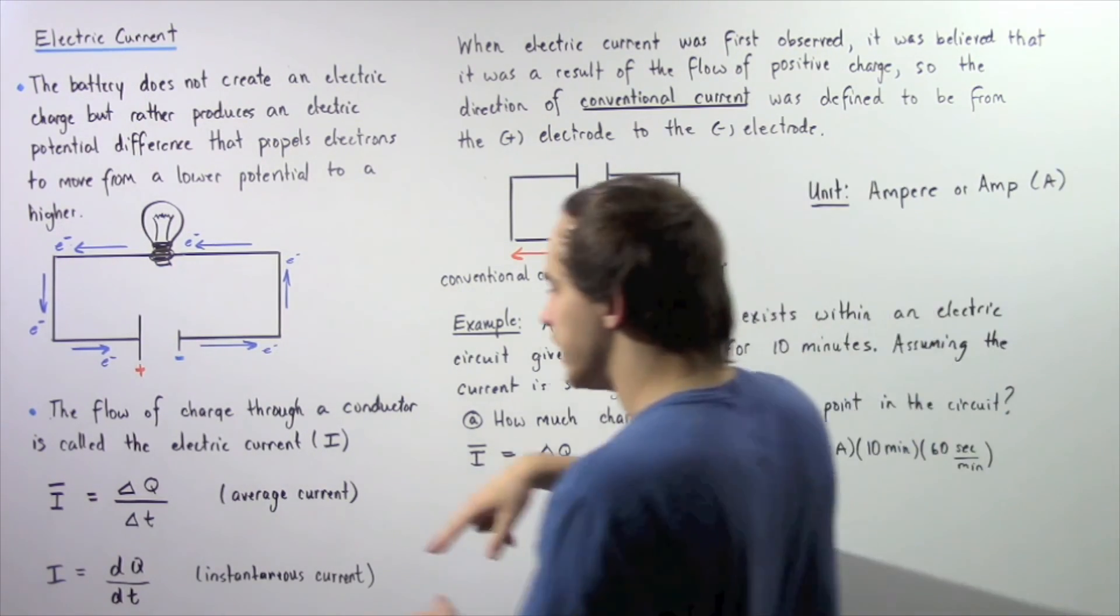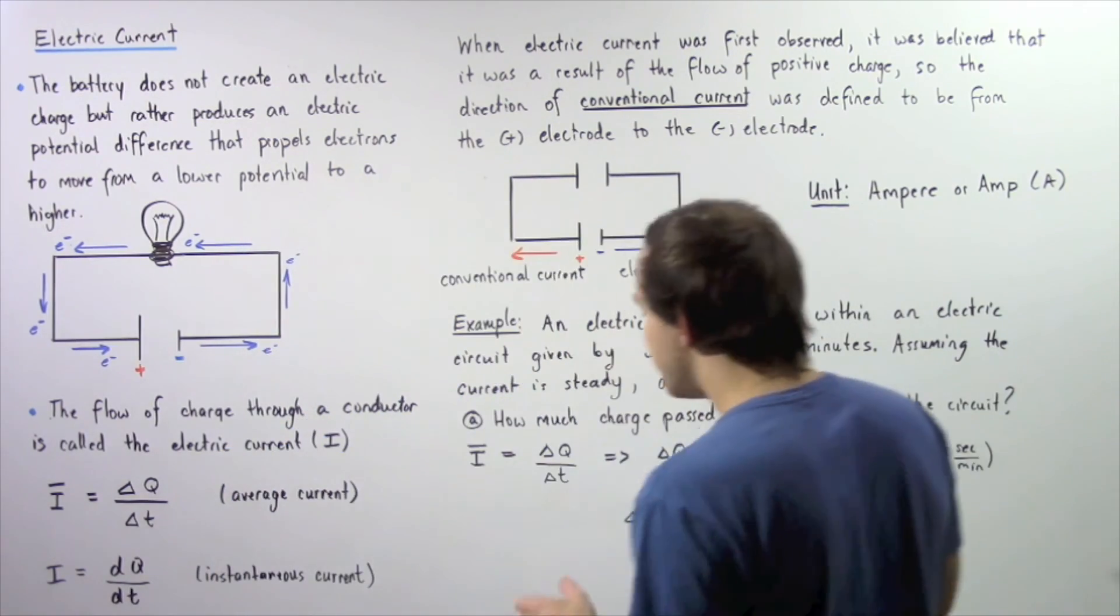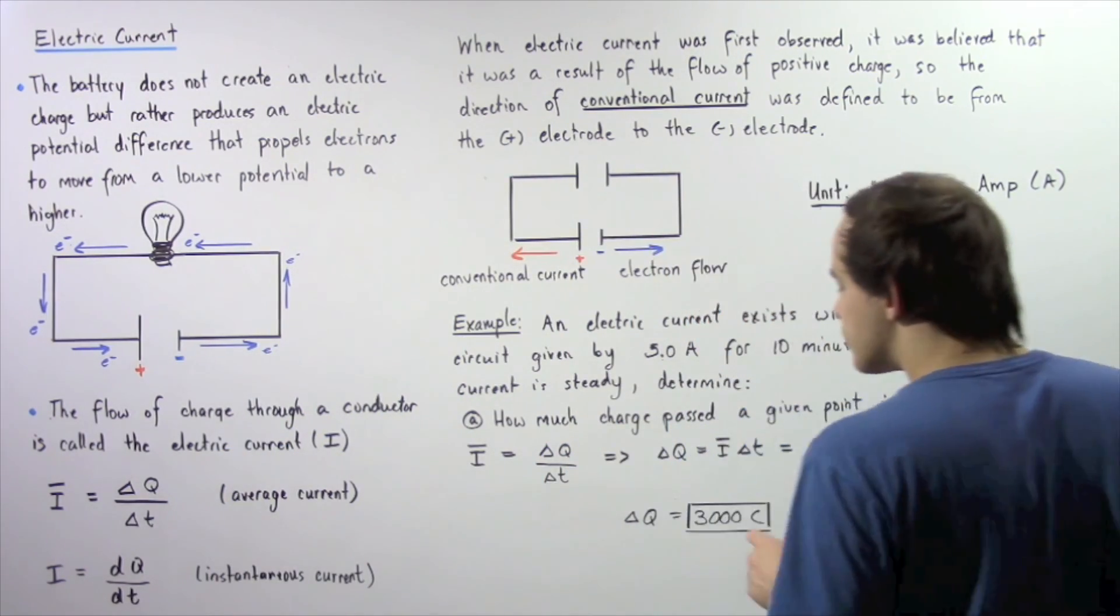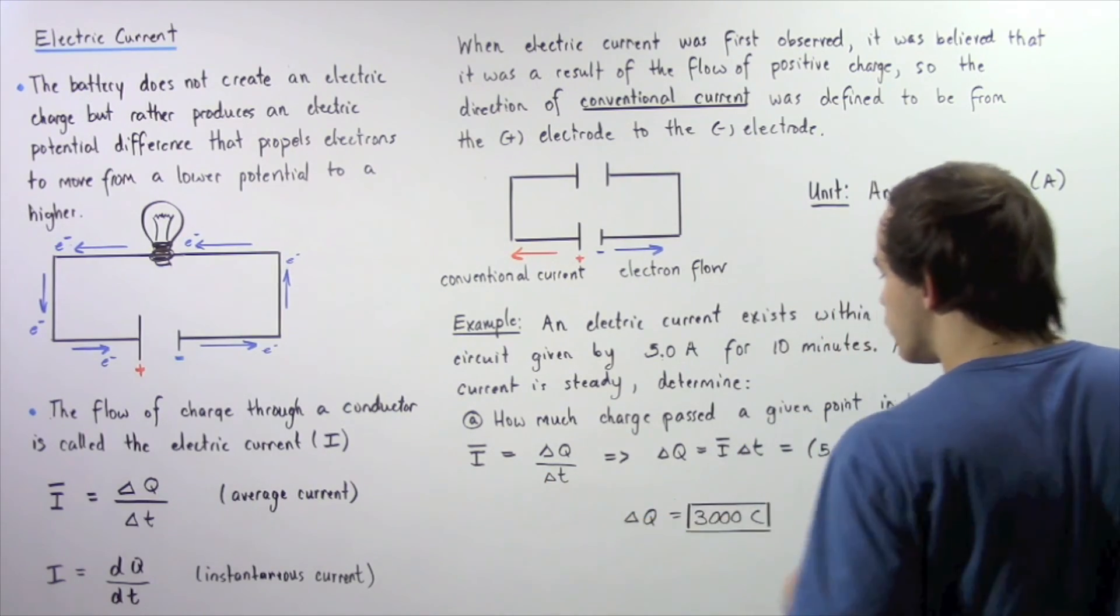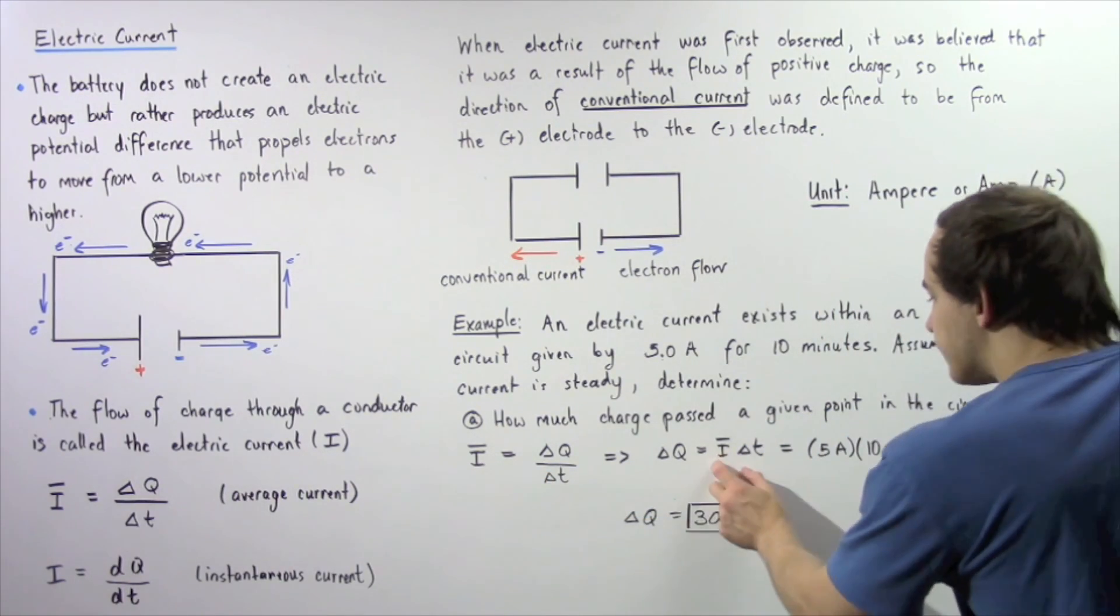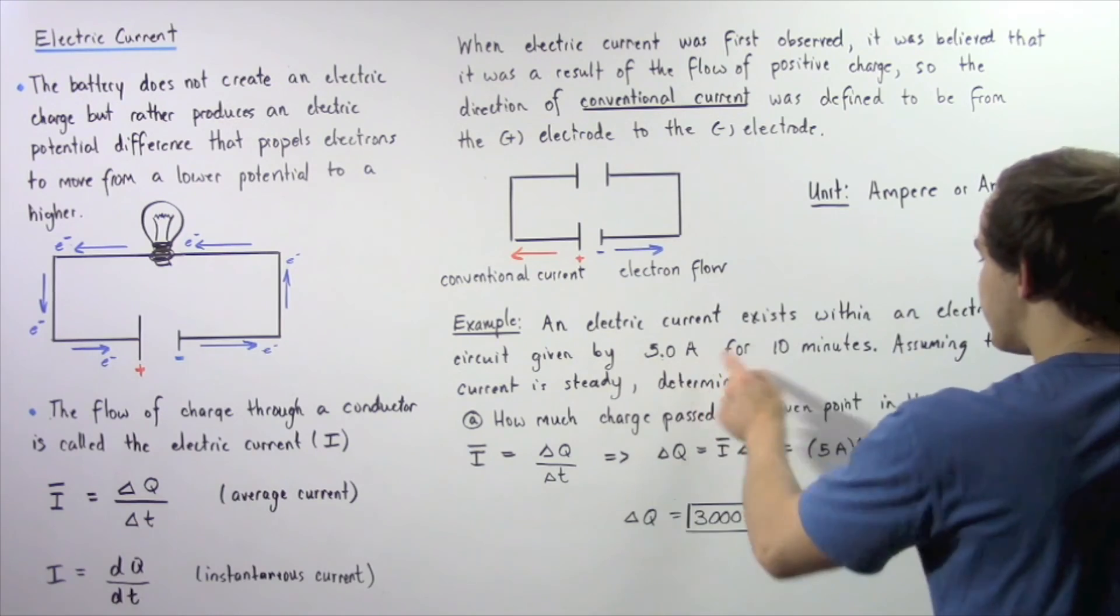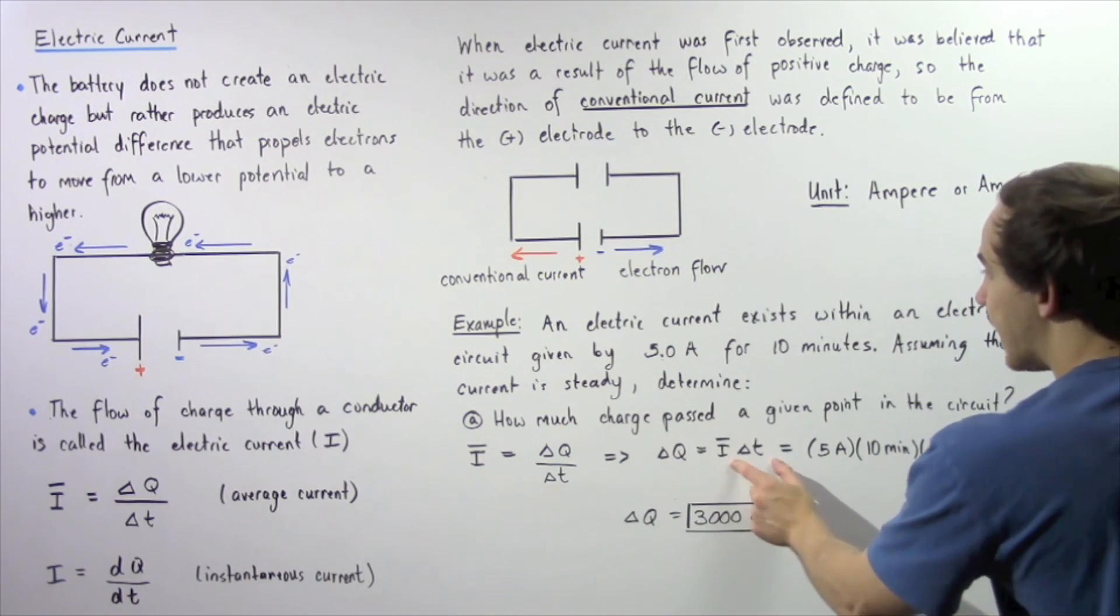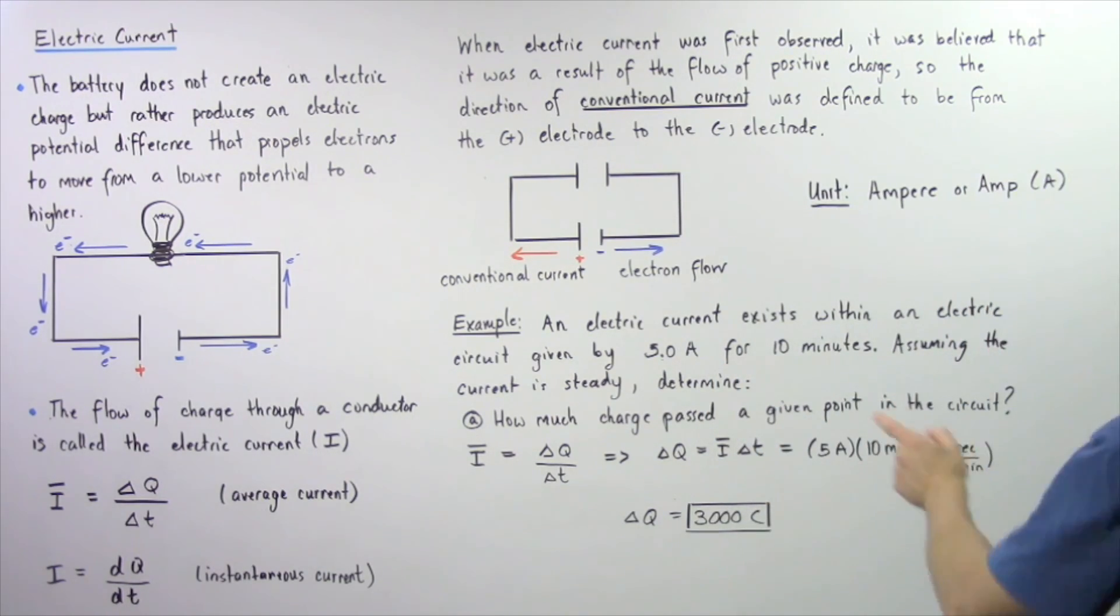So we essentially use this equation and we solve for our change in Q. So the change in Q is equal to the product of our average current given to be 5 amps and the change in time which is given in seconds. So 10 minutes multiplied by 60 seconds per minute, the minutes will cancel and we're left with an electric charge of 3000 Coulombs.